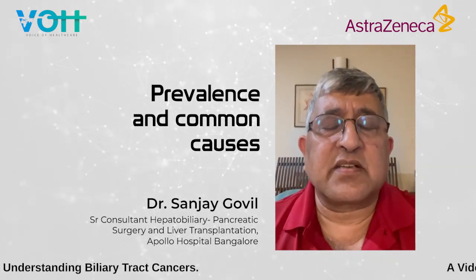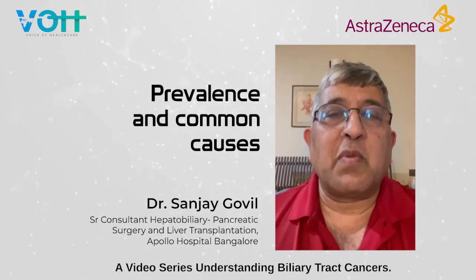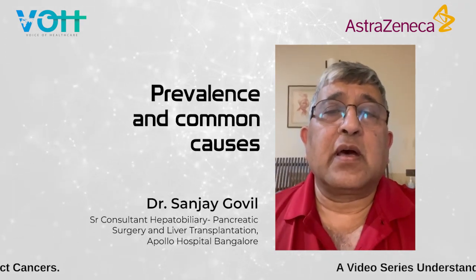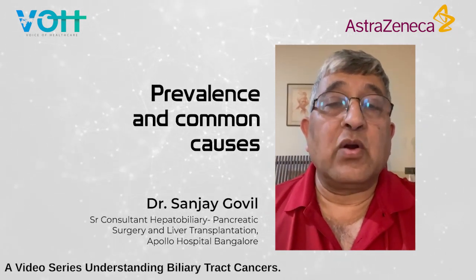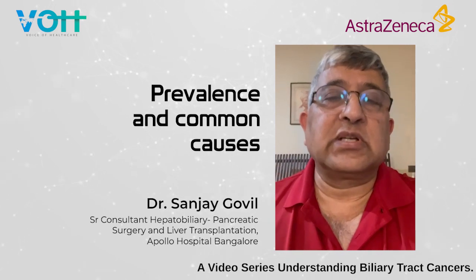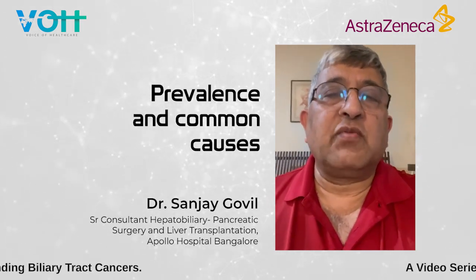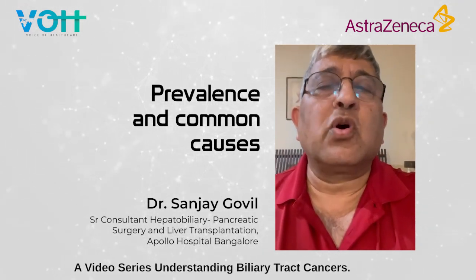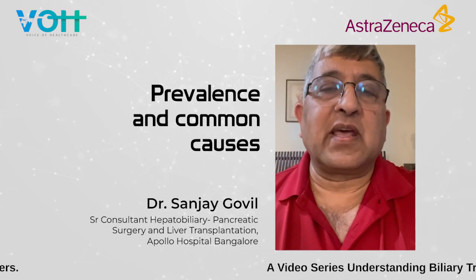The second common cause of gallbladder cancer is what is called porcelain gallbladder, where the entire gallbladder wall — or part of it — becomes calcified. It used to be said that one in five patients who have a porcelain gallbladder will have a cancer within it. This is probably an overstated number; the true number is less. However, it is prudent that if you are diagnosed with a porcelain gallbladder, you have your gallbladder removed, because there is a high association with gallbladder cancer in these patients.